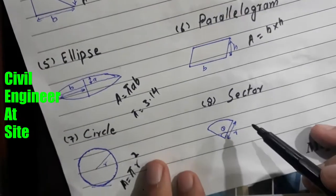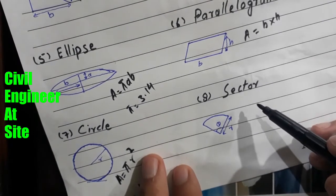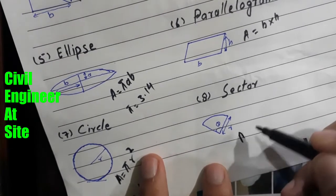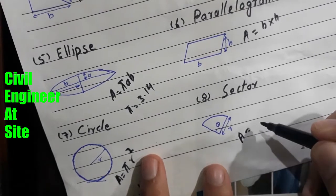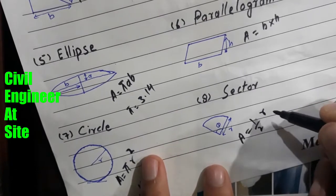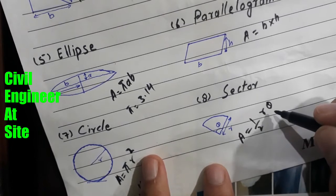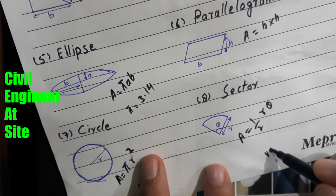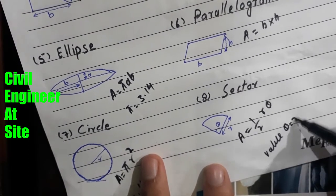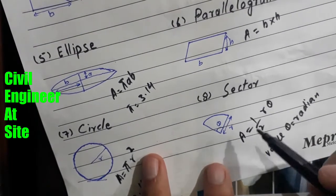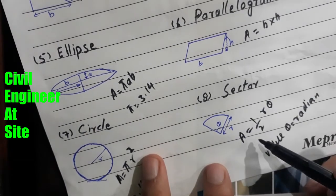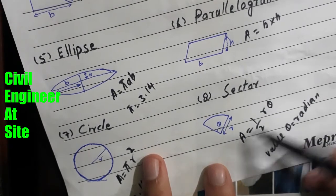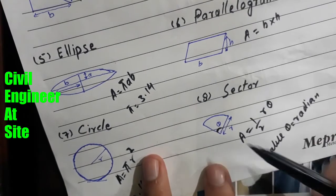The eighth shape is the sector — a sector is a piece of a circle. The formula for the area of a sector is A = ½ × r × θ, where theta denotes the angle and the value of theta will be in radians. So to find the area of a sector of a circle, we use A = ½ × radius × θ, where θ is the angle in radians.